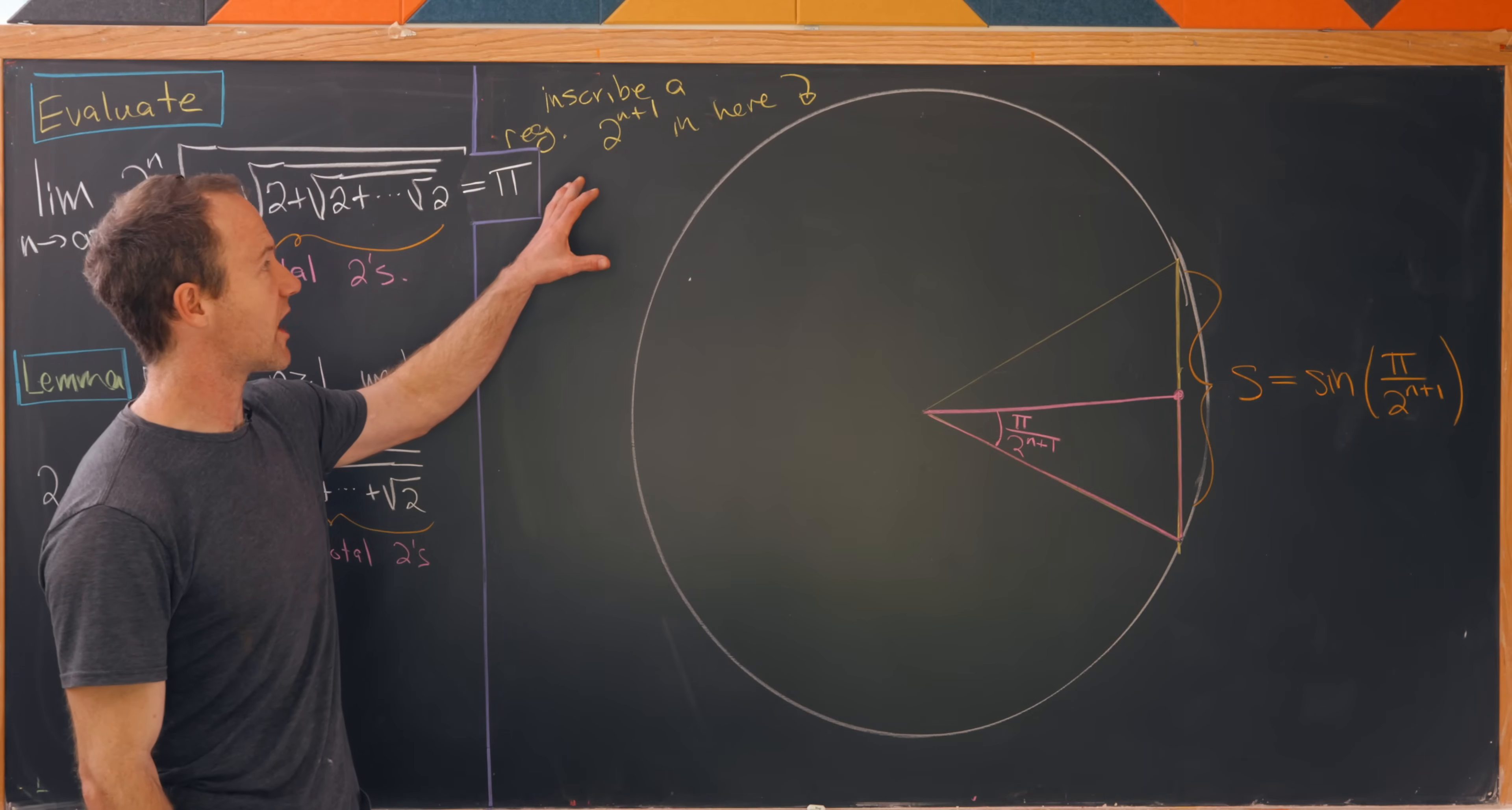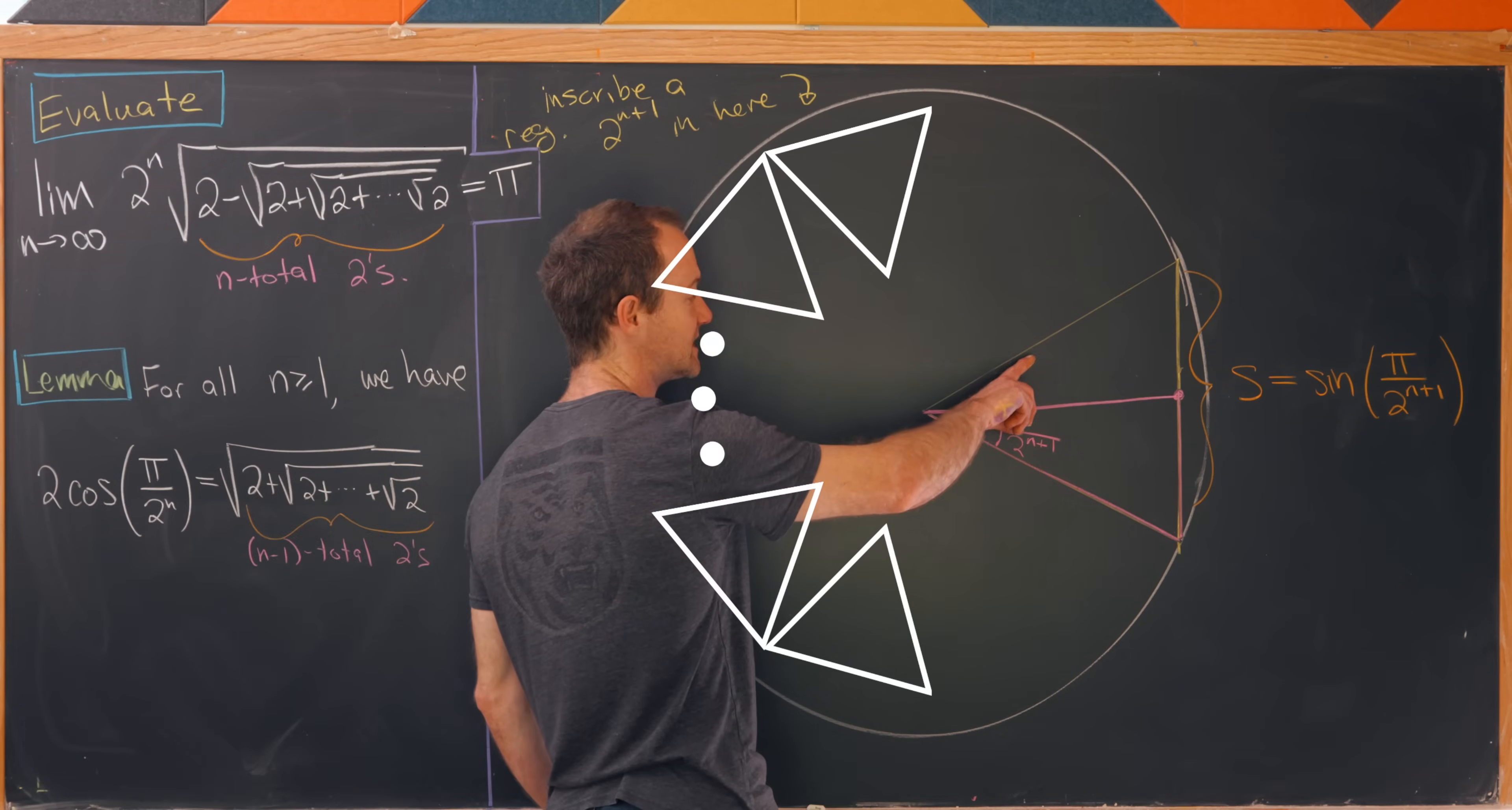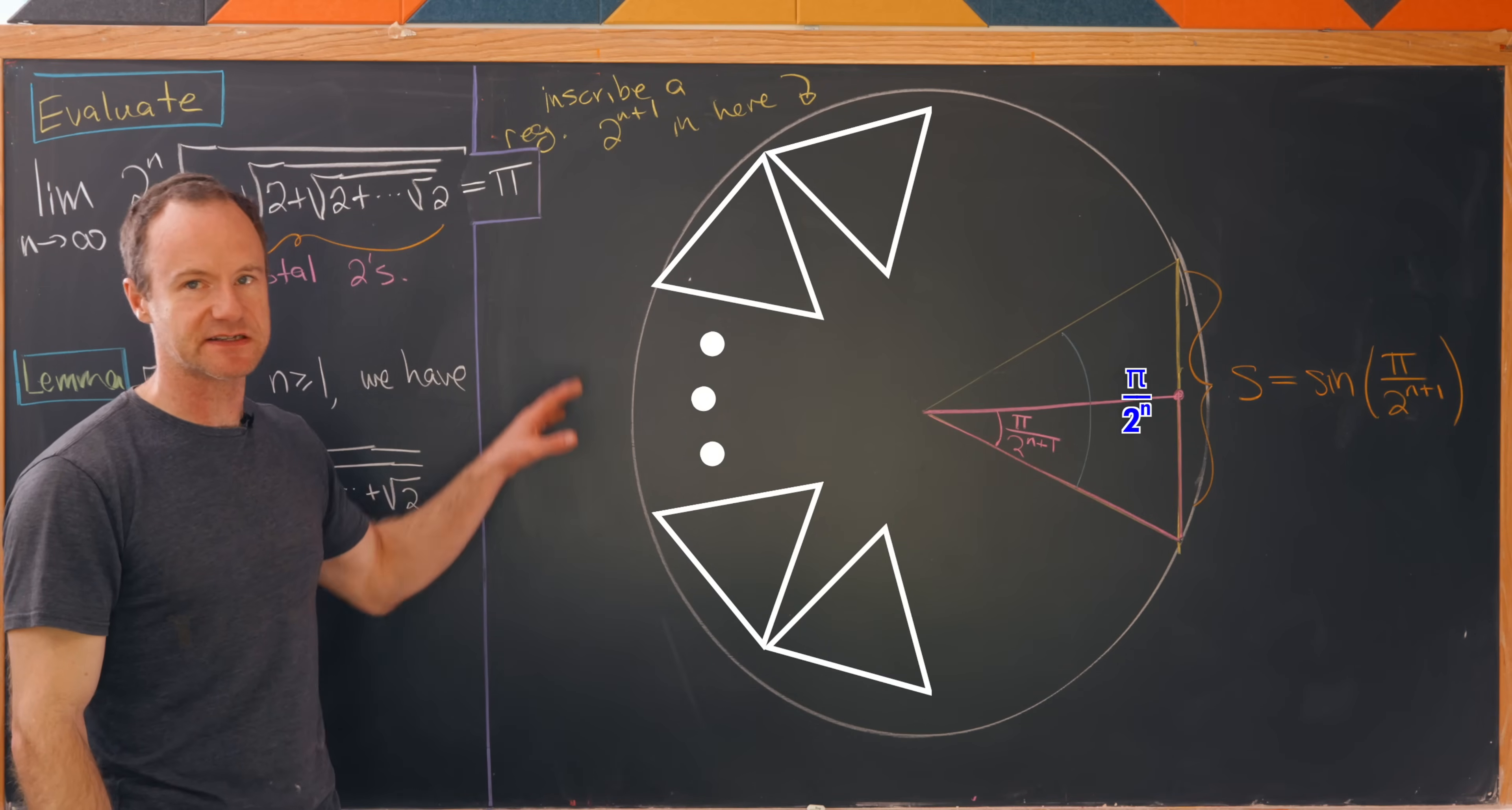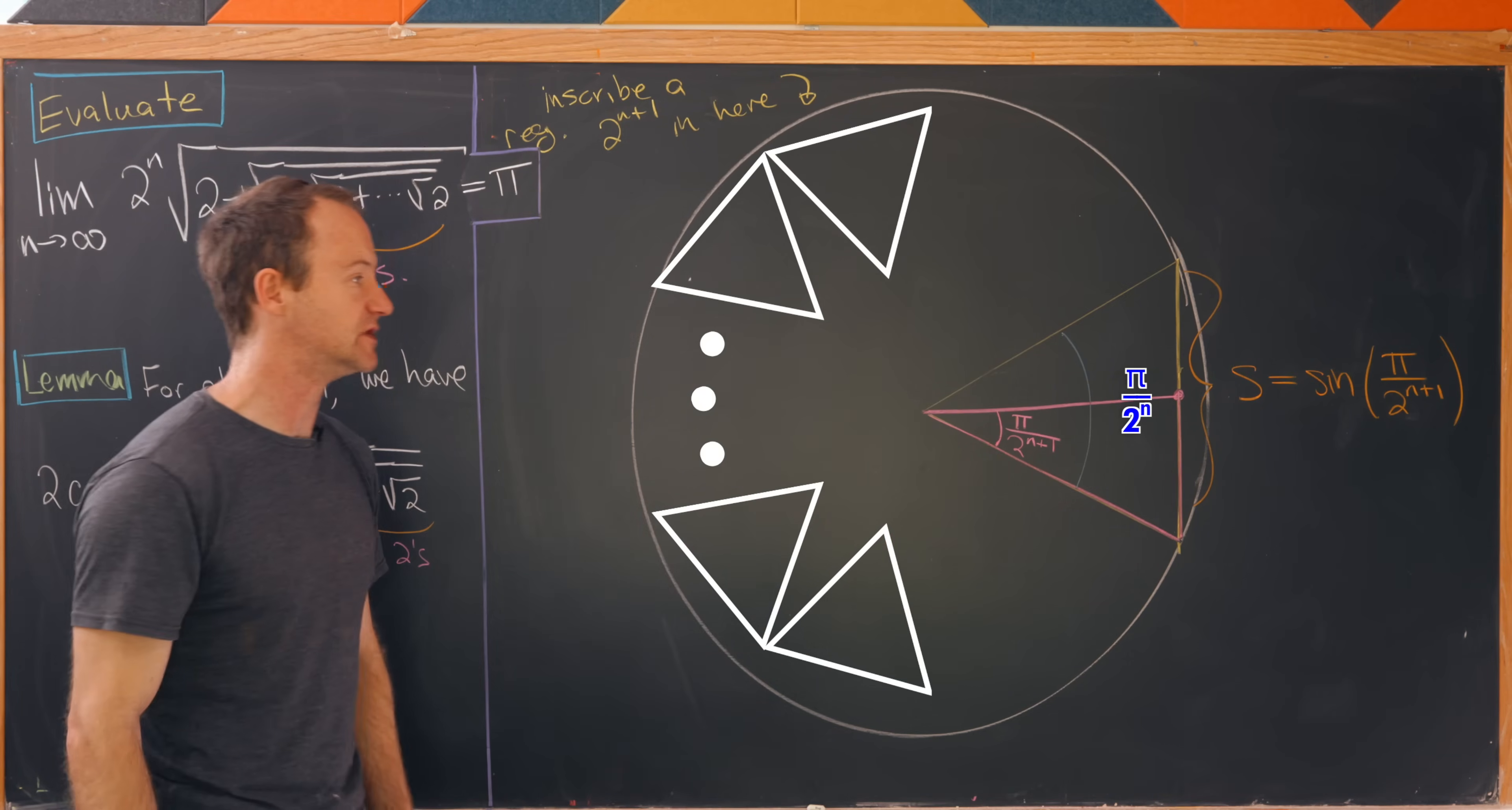Let's inscribe a regular 2 to the n plus 1 gon inside of a circle. Now let's look at this little sector of that 2 to the n plus 1 gon. This entire angle right here, maybe I'll shade it in blue, will be pi over 2 to the n. That's because we take the entire angle that makes the circle 2 pi and divide it by 2 to the n plus 1. But if we cut that in half we get the angle pi over 2 to the n plus 1.